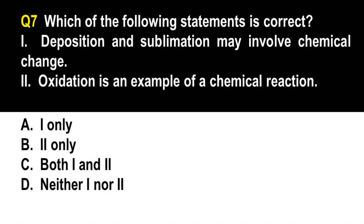Which of the following statements is correct? Statement 1: Deposition and sublimation may involve chemical change. Statement 2: Oxidation is an example of a chemical reaction. A. One only. B. Two only. C. Both one and two. D. Neither one nor two. The correct answer is letter B, two only. Deposition and sublimation are only physical changes — deposition is conversion from the gaseous state to the solid state, while sublimation is from solid to gas. Oxidation is a chemical reaction in which a reactant loses electrons during the reaction.